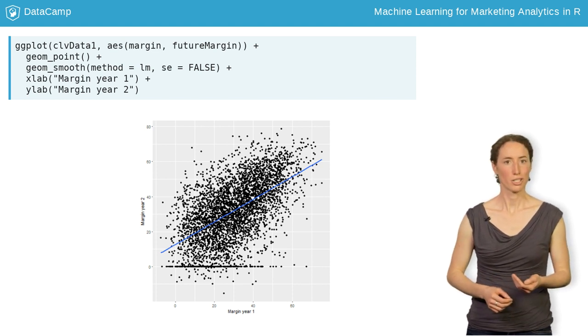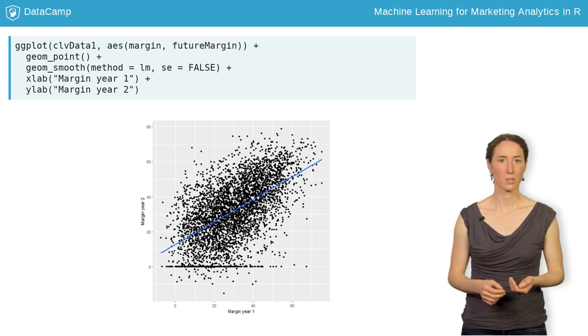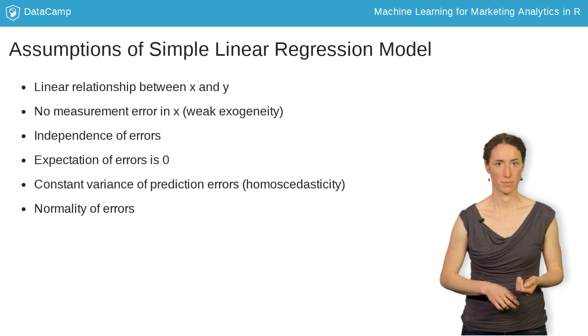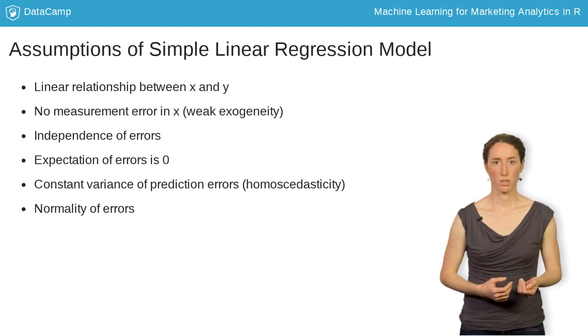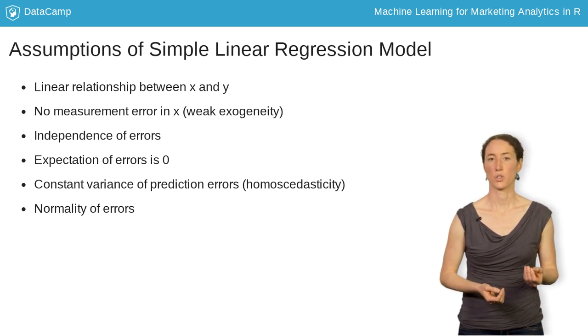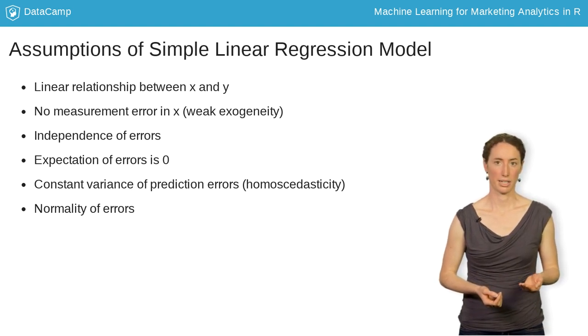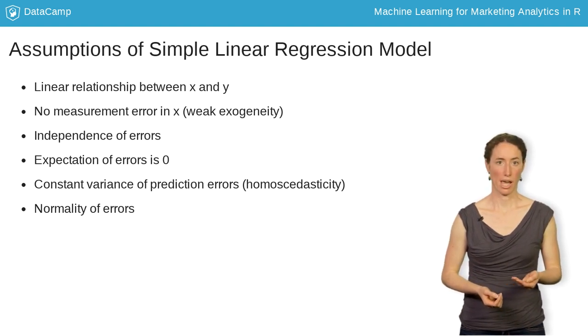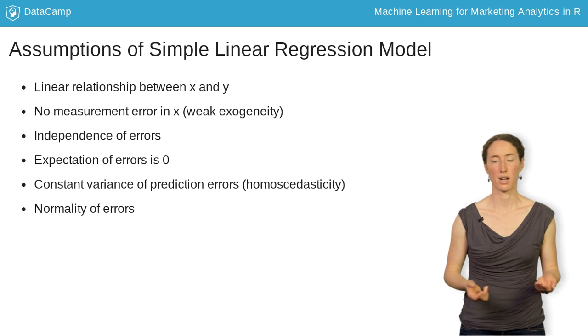Before moving on to multiple linear regression, let's take a look at the conditions that the data must satisfy for linear regression to be the best method. The relationship between the independent variable and the dependent variable should be linear. The independent variable should not contain any measurement errors. The residuals should be uncorrelated. One cause of correlation among the errors is violation of the linearity assumption.